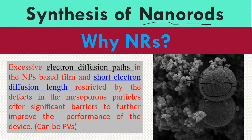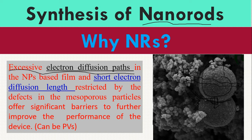When you put electrolyte or some dye on the material, it acts on the surface. When an electron diffuses from one surface to another, it has to pass through holes in the electrolyte, and there are chances of recombination. Recombination means holes and electrons combine — hole transport material has holes, electron transport material has electrons, and they combine. This excessive electron diffusion path is the first drawback.